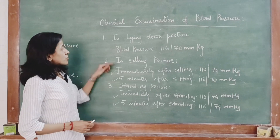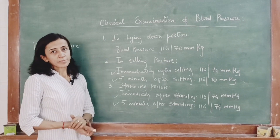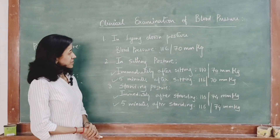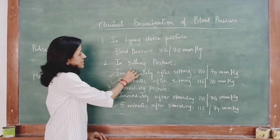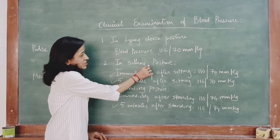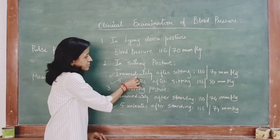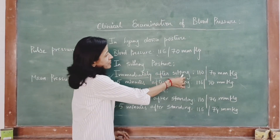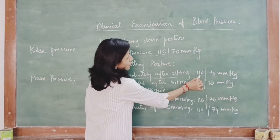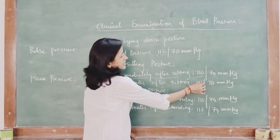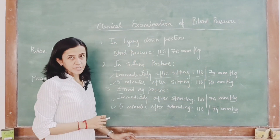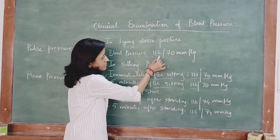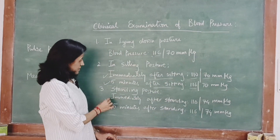First, ask the subject to take rest for about five minutes, then measure the blood pressure in the lying down posture. After that, ask the subject to change to a sitting posture and measure blood pressure immediately. Because of peripheral pooling of blood, the systolic blood pressure decreases and there is no change in diastolic blood pressure. Five minutes after sitting, the blood pressure comes back to baseline.